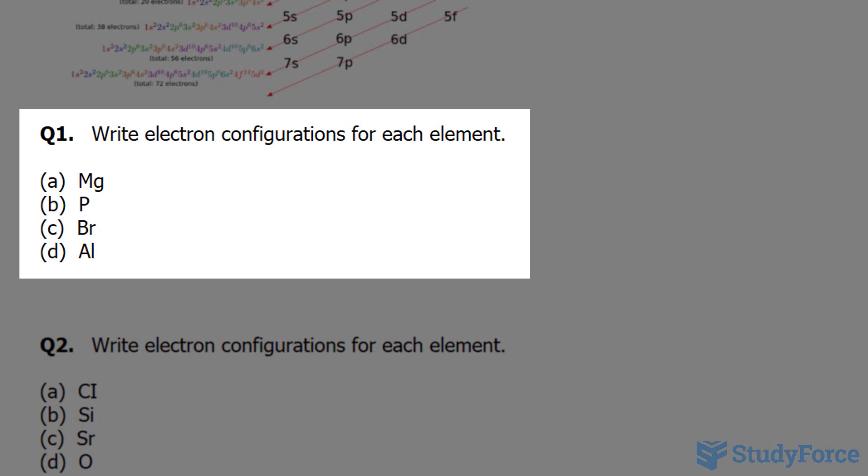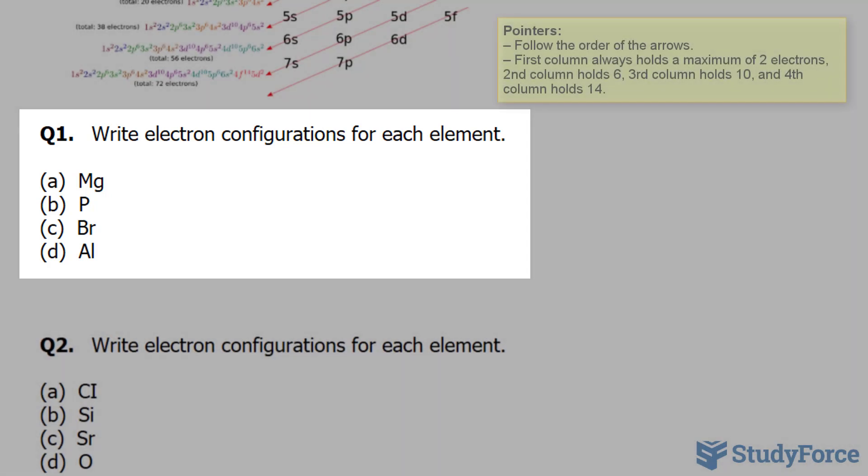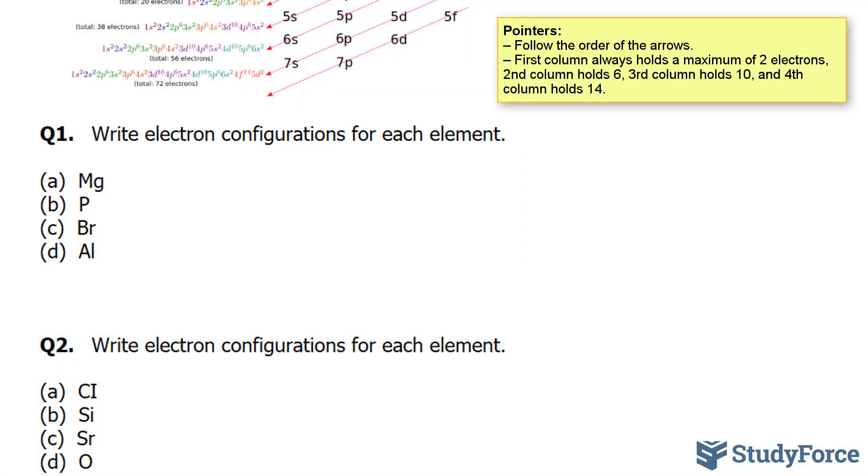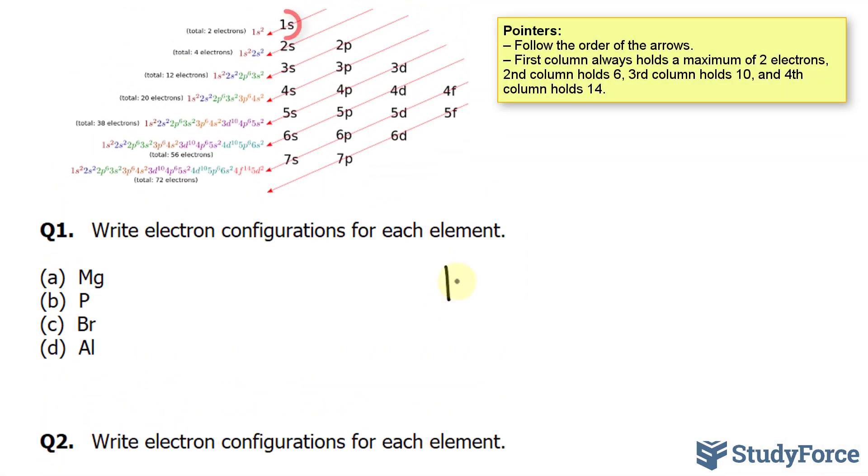In question number one, we're asked, write the electron configuration for each element. We start with magnesium, and magnesium contains 12 electrons. So we distribute two of these electrons into the 1s orbital, leaving us with 10.